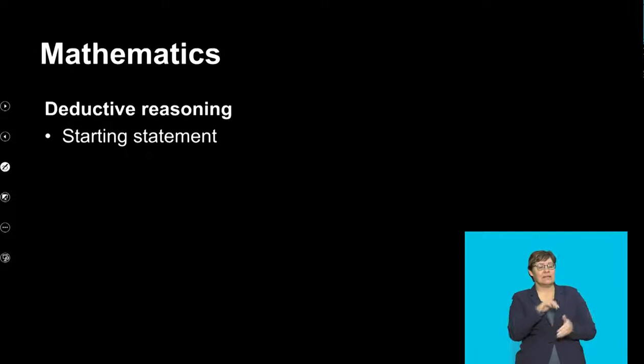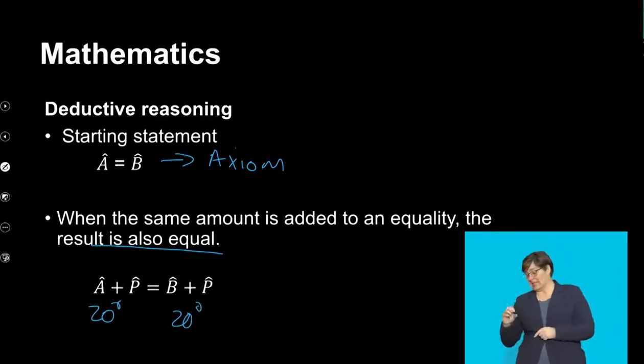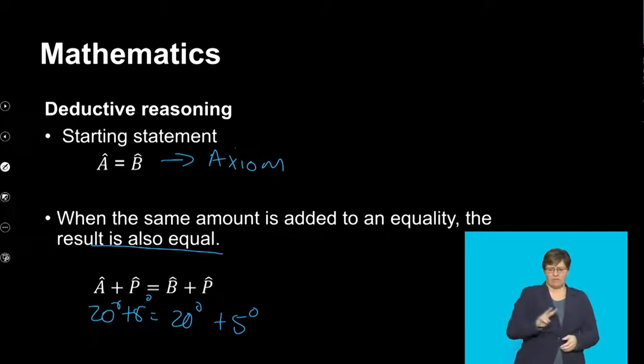This deductive reasoning of ours, we start with the starting statement. This is our axiom, because there is no proof that A is equal to B. But if we were to add the same amount on either side of this particular equality, then we know that the result will also be the same. If I add the same number on either side of the equal sign, it's going to give me the same value on either side. So that's what we are trying to say here, that if I add the same amount to the equality on either side, then the result will also be the same.